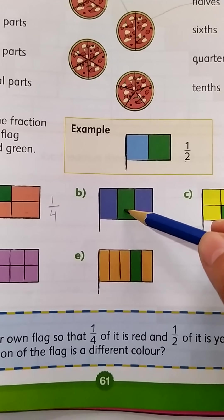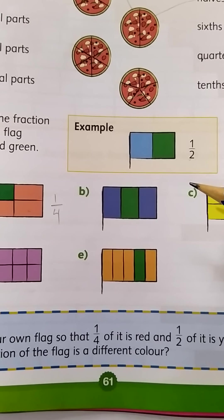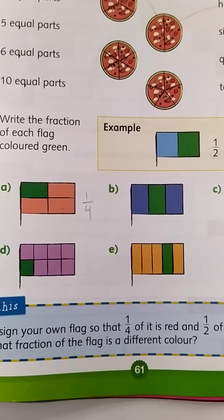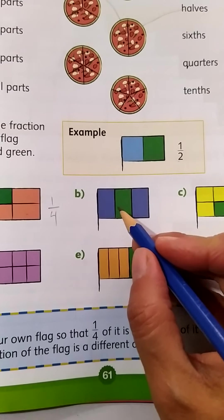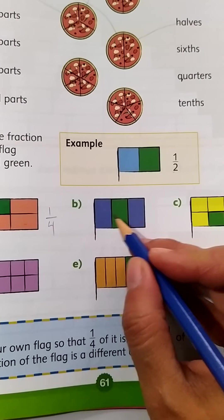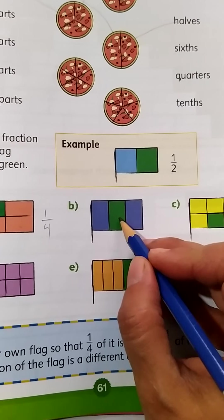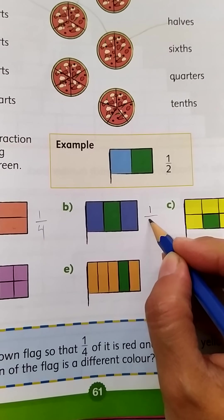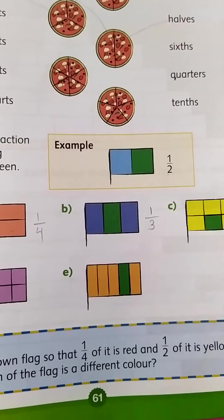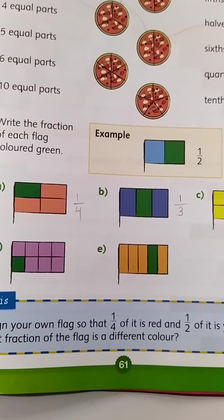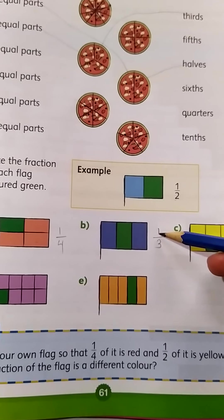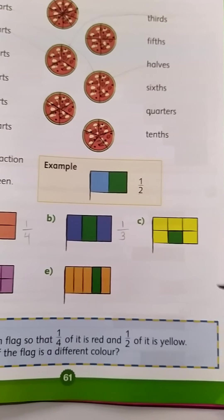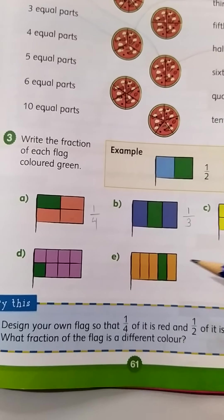Then let's move to part B. How many parts are green? Only one. How many total portions? One, two, and three. So one is green and there are three portions in total — that means it is one over three. That's how you are going to do this question.